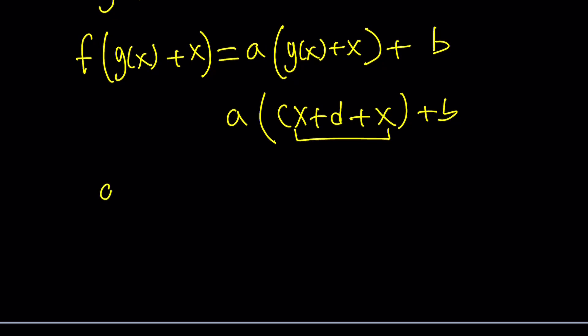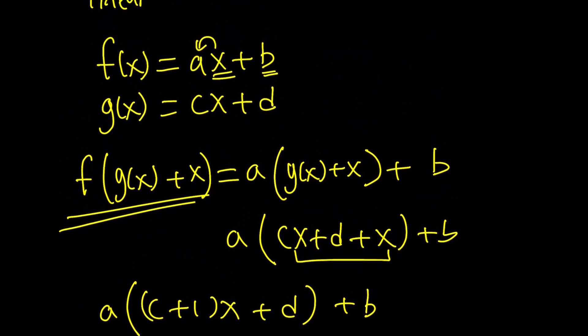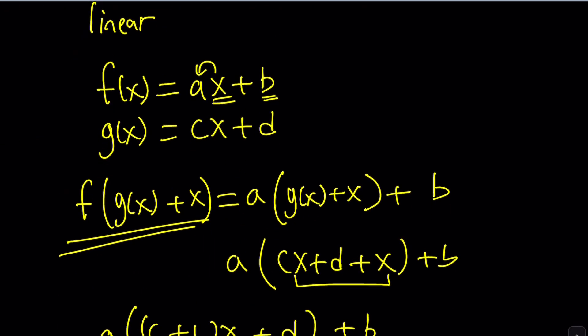So we have a(c + 1)x + d, and then plus b. And of course, this is f(g(x) + x), and we do know that it's actually equal to x. So this equals x. That's the first equation.